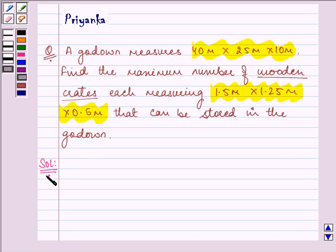Let us analyze this question first. Suppose you have a big godown in a cuboidal shape. And in this godown, you need to have some wooden crates like this. Now, you need to find the maximum number of these small crates that you can adjust or store in this godown.